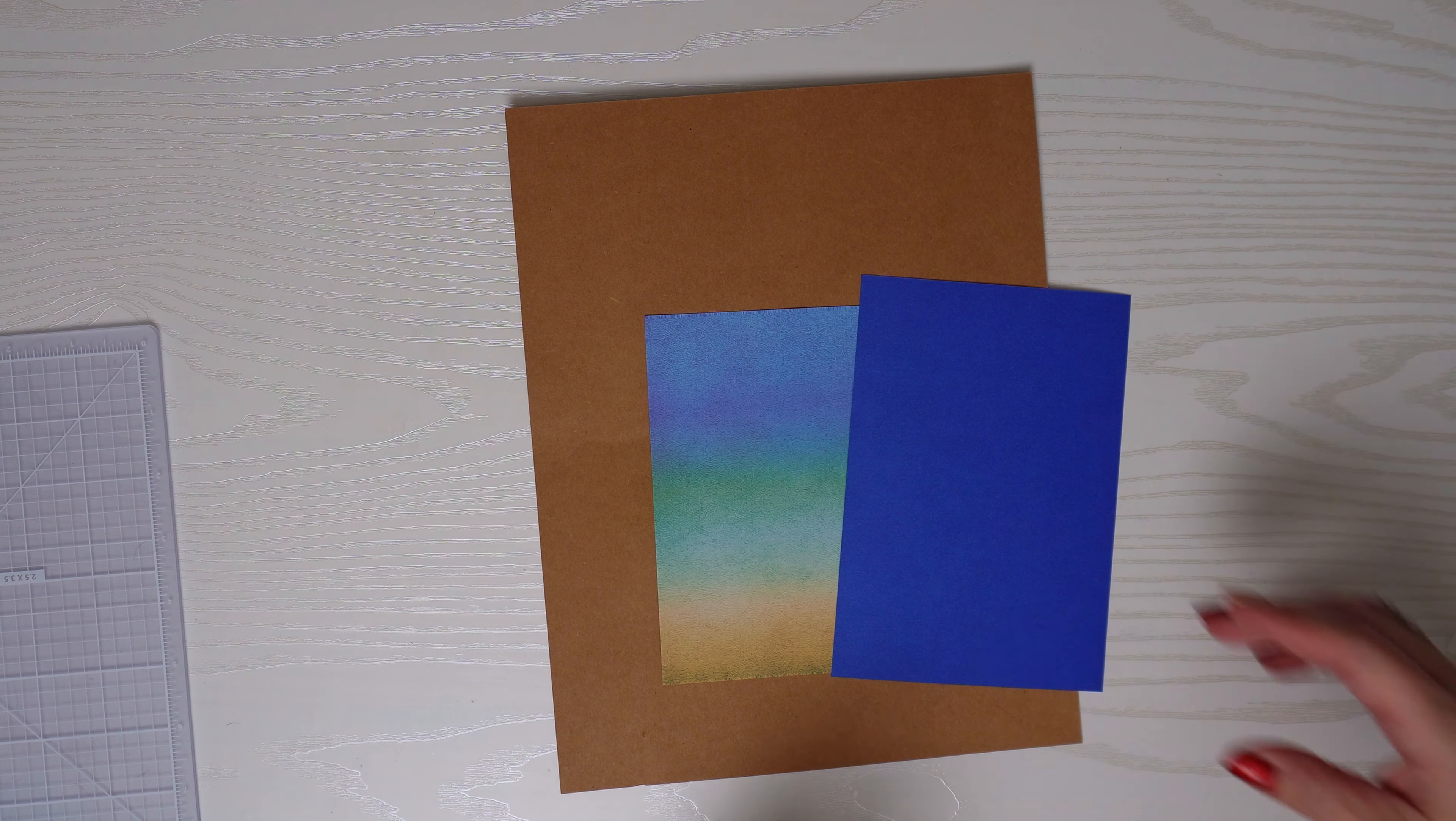So I'm going to use some design paper and one sentiment stamp. We're going to make a very quick, very masculine card. To start off, I'll use some masculine type colors. I'm using this blue, green, and tan colored 6x6 design paper and a beautiful bold blue that we'll use as a border for that design paper. We'll put this on some craft brown cardstock base.